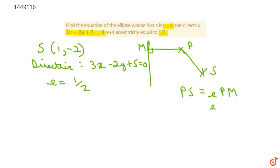Now if we have P representing some point (h, k), then we know that PS is equal to e times PM. This relation should hold.